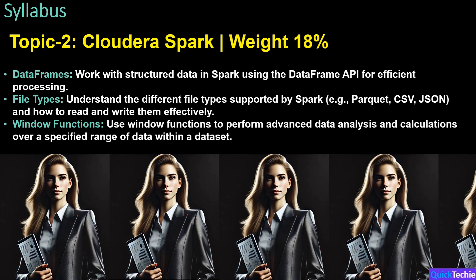Topic 2 is Spark, which makes up 18% of the exam. First up are DataFrames, central to working with structured data in Spark. You'll need to know how to use the DataFrame API for efficient data processing, as it's one of the most commonly used methods for handling large datasets. Next, you'll focus on file types — Spark supports a variety of file formats including Parquet, CSV, JSON, and more. Finally, window functions are extremely useful for advanced data analysis, allowing calculations over a specific range of data, making it easier to perform tasks like ranking, running totals, and moving averages.